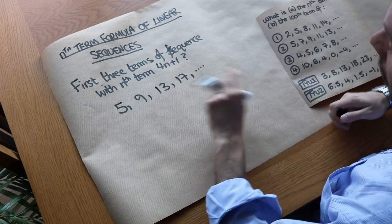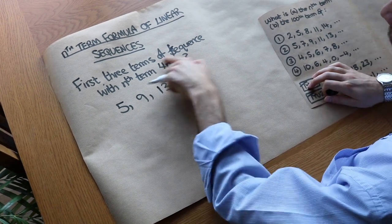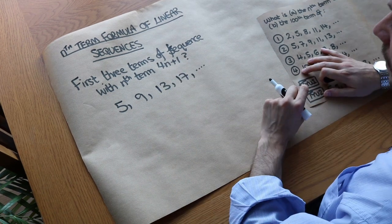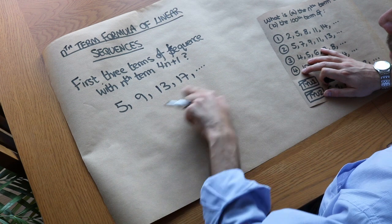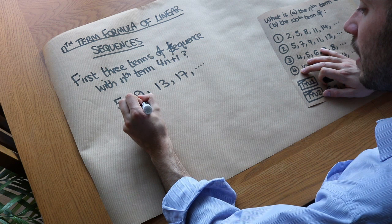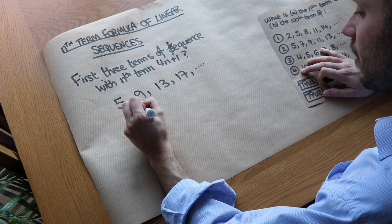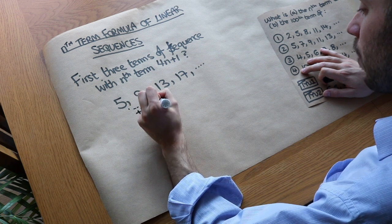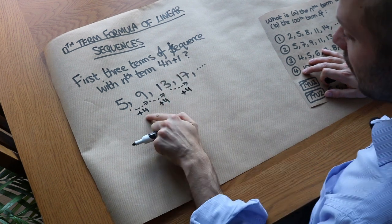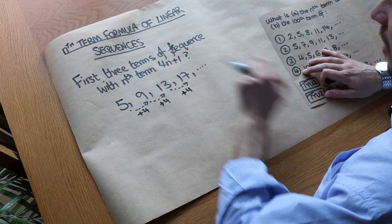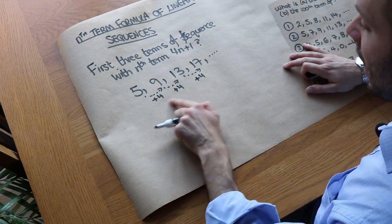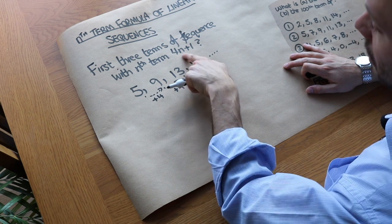Now let's say that I gave you this sequence but didn't give you the nth term formula, and I said work out what this formula was. Do we have a method to do it? Is there any pattern in these numbers that gives us clues as to the formula? Well there is. If we look at the first difference, we've got that we're adding 4, adding 4, and adding 4. And can you see that this difference matches the number in front of the n? So I know the formula is going to start with 4n.